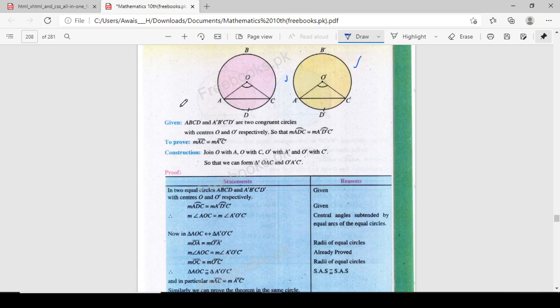It's time to explain this theorem. Given ABCD and A'B'C'D' are two congruent circles, these are letters. So with circle O and O', this circle respectively, so that measurement ADC arc is equal to m A'D'C' arc. To prove m AC and m A'C' are equal.